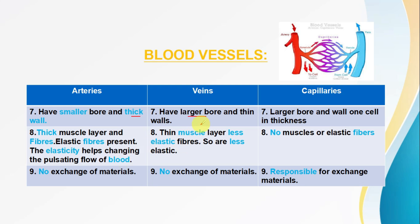The arterial walls have thick muscular layers and elastic fibres, so arteries are elastic. Veins have less elastic fibres and thinner muscular layers, so they are less elastic. Capillaries have walls that are only one cell thick — no muscles or elastic fibres at all.